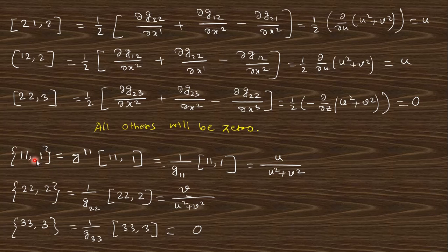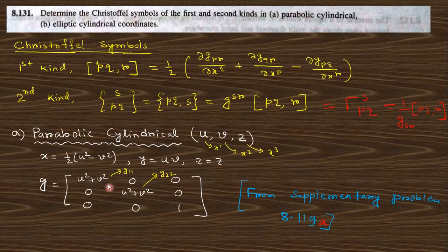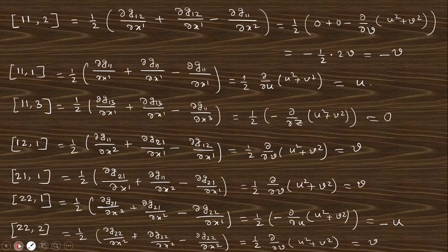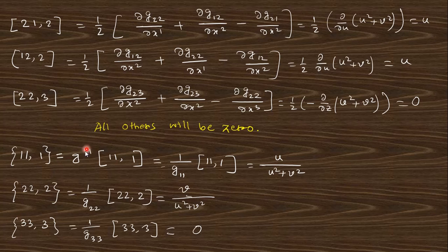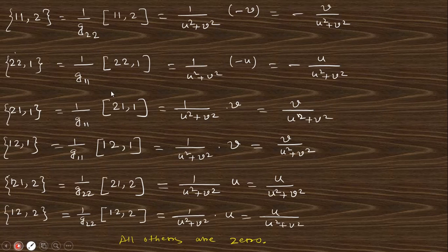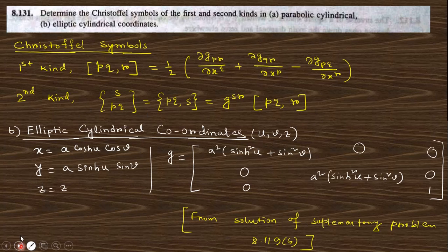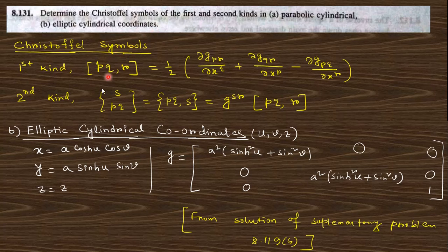And now in case of second kind you can put this G11 and so 1 by G11, put this value G11 and this term. Because these are the diagonal, they are non-zero only these two terms G11 and G22. So this R and S must be equal. That is why you will get G11, G22 and so on. Just follow this you will get this answer. Take this screenshot and match your own answer.